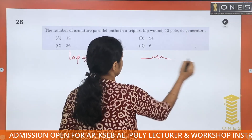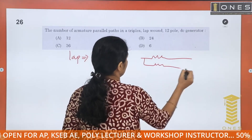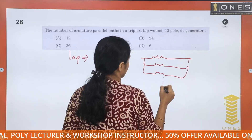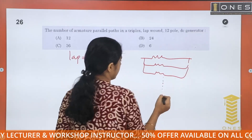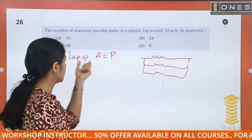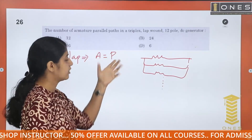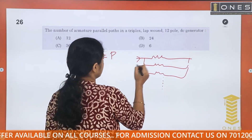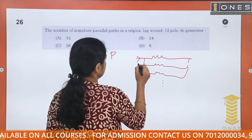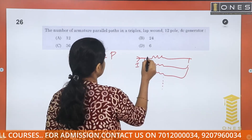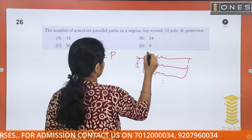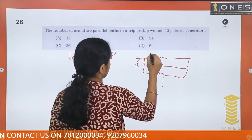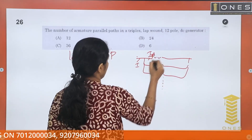For lap winding, the number of parallel paths a is equal to p, the number of poles. The total current is divided as I by A across the parallel paths.